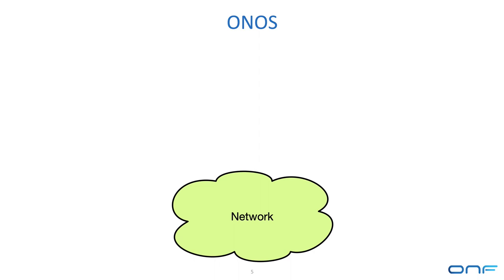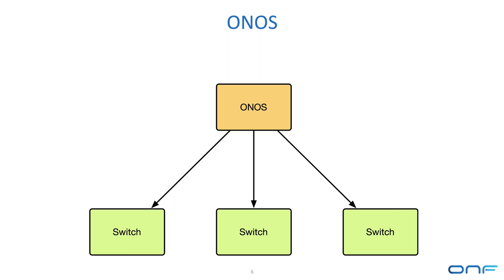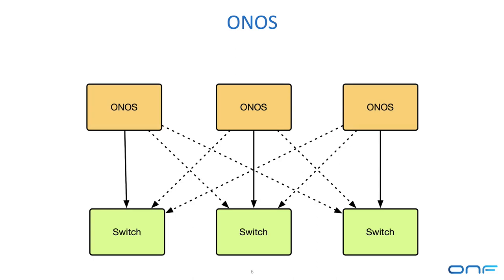The idea of software-defined networking is to take network control out of proprietary hardware into a software layer. In a network with hardware switches, ONOS sits above the switches and controls them for packet forwarding, device configuration management, and things like that. ONOS does this with several nodes — it's a distributed system providing scale and fault tolerance — running protocols like gossip, failure detection, consensus, sharding, and primary backup. It's a large and complex distributed system.